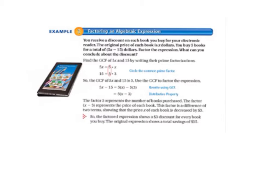Moving on to page 141. We're factoring an algebraic expression. We receive a discount on each book we buy for our electronic reader. The original price of each book is x dollars. We buy 5 books for a total of 5x minus 15 dollars. We factor the expression. What can we conclude about the discount? It says find the greatest common factor of 5x and 15 by writing their prime factorizations.